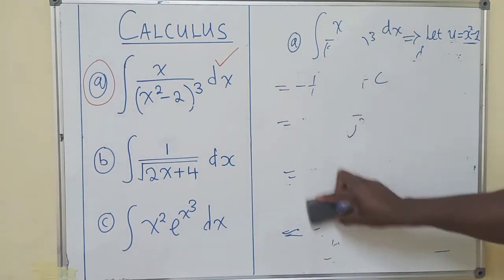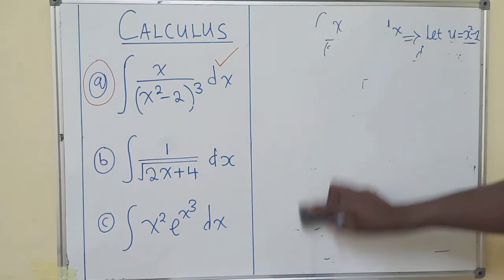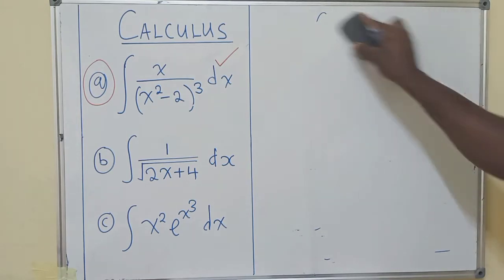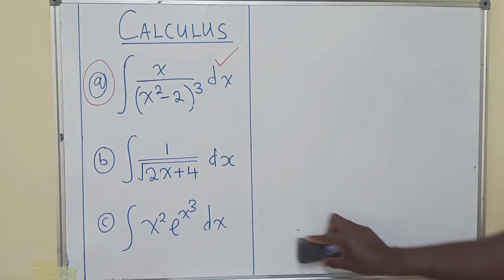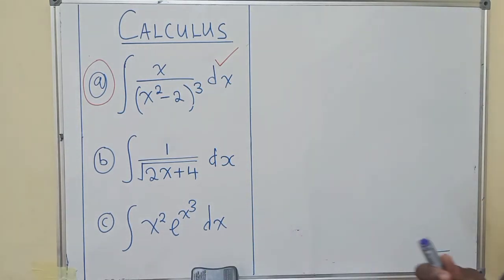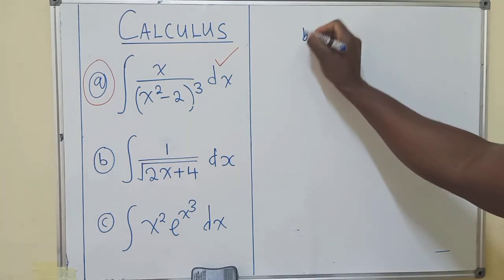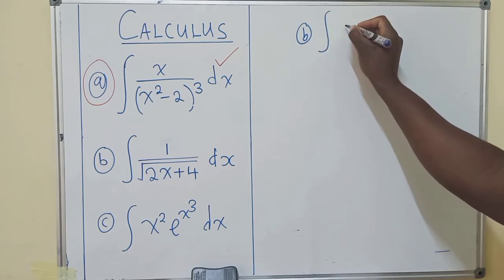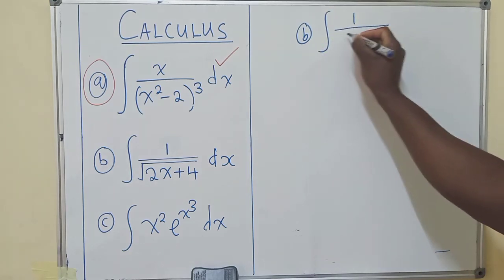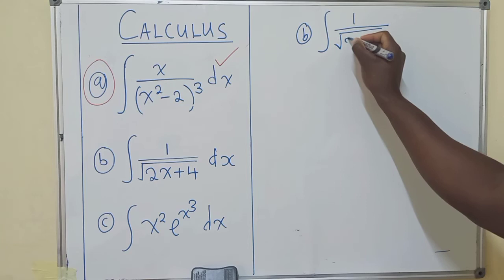Let's clear space for the next question, which is question b. Okay, so for question b right here we have the integral of 1 over the square root of 2x plus 4, dx.